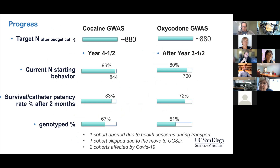Where are we? For the cocaine GWAS, four and a half years since we started, we're almost at 80 animals - the level we were hoping for. The oxycodone GWAS will be behind because we started later, but we're expecting to reach those goals despite COVID and having to move our lab from Scripps to UCSD in the middle of the study.